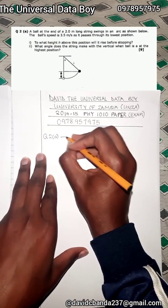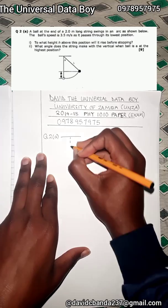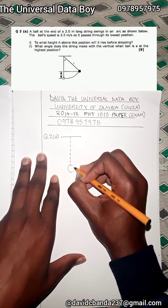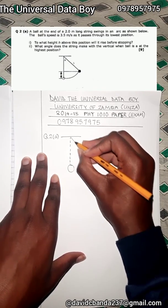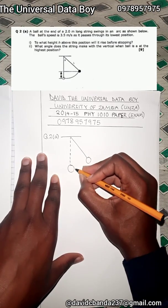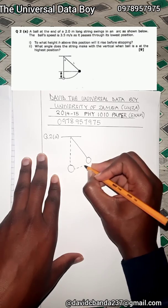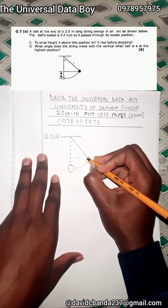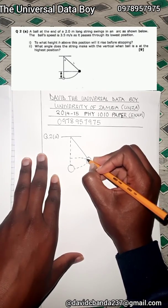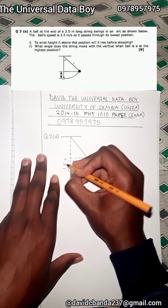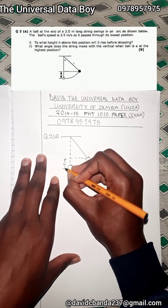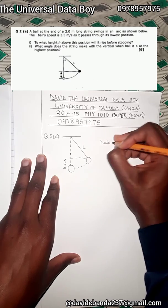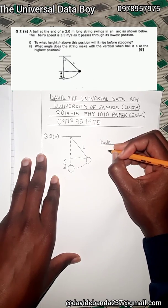We'll do what we do in any kind of physics problem — we're going to draw the diagram so that we can get some understanding of exactly what's happening, and from this same diagram we can get some manipulations. We're having it moving in an arc, and we have the distance h, and then the length. Now we can collect our data.